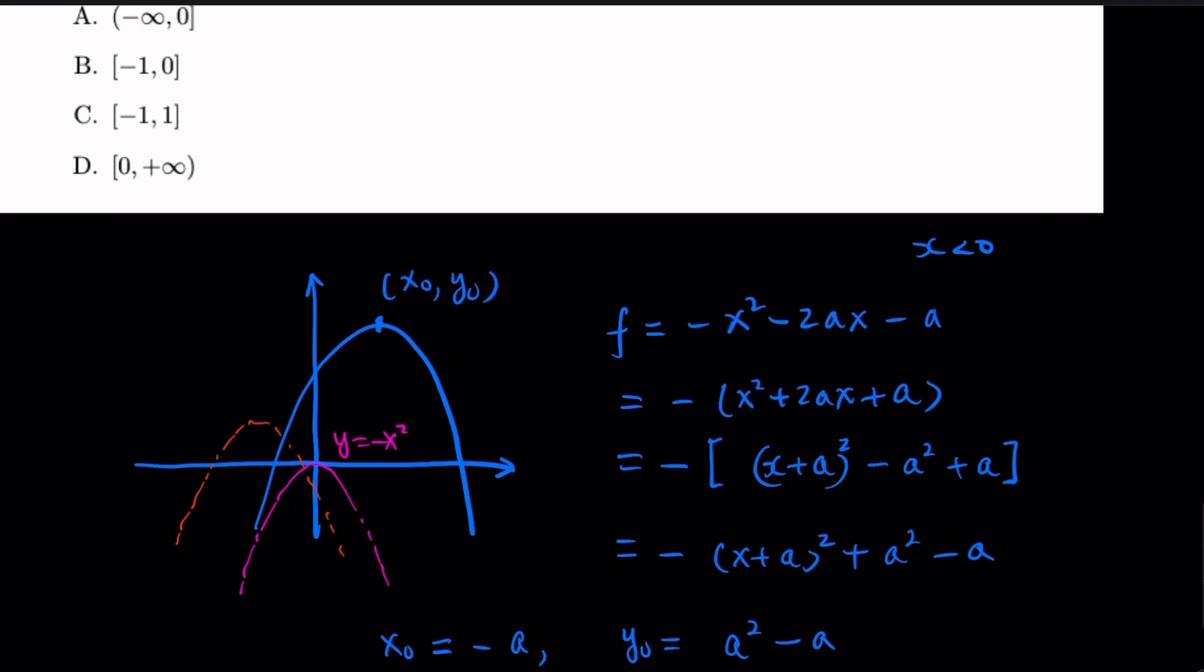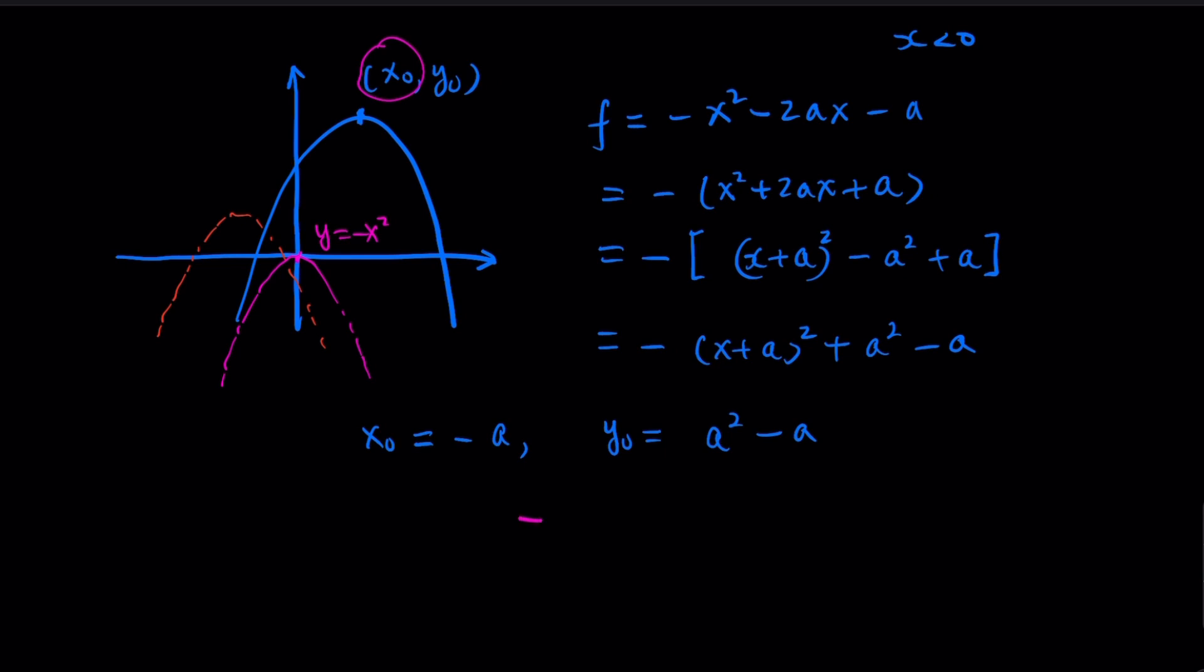So in order for it to be strictly increasing earlier, we know that this x0 must be on the right plane, or 0 here in this case. Which means -a, which is the x0 value, must be greater or equal to 0. So which means a has to be less than or equal to 0.